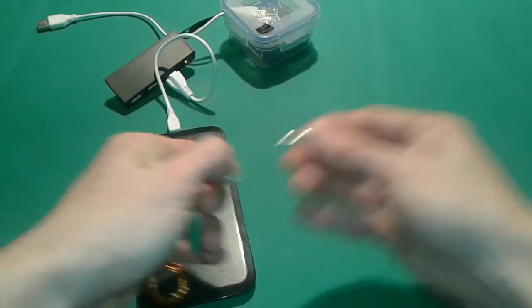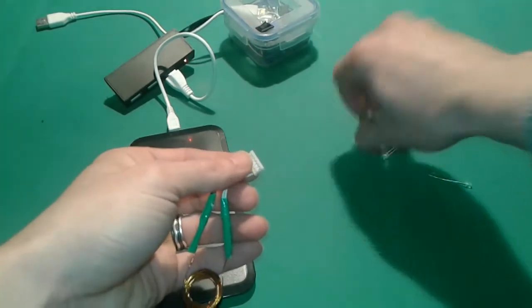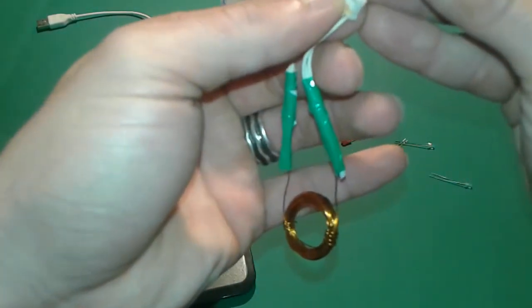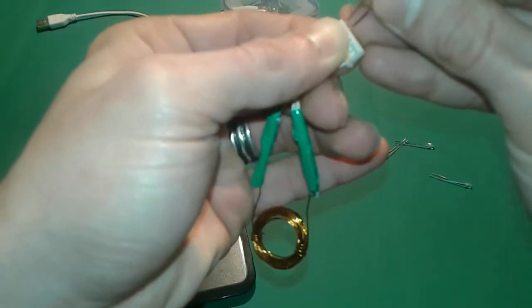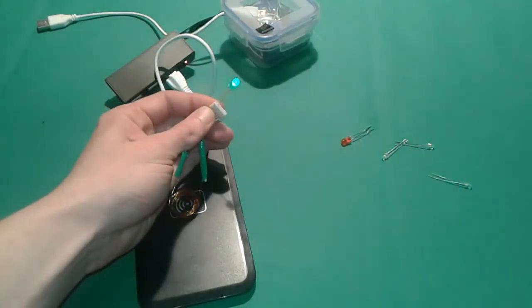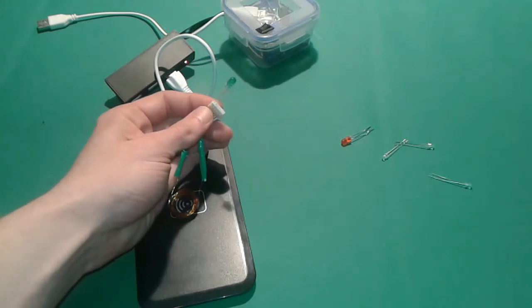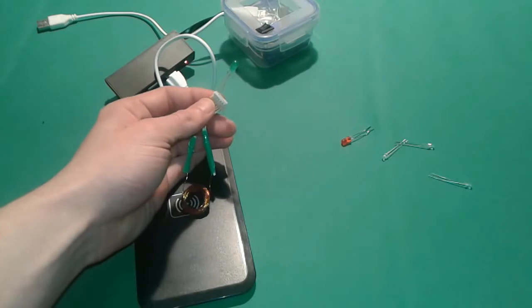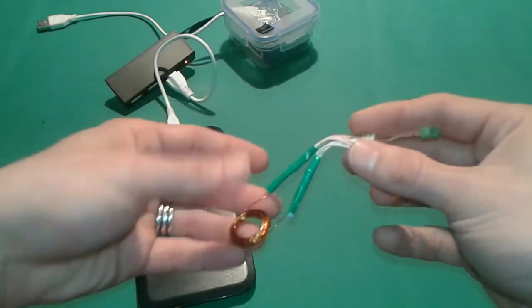Alright, let's test another LED, a green one. It's lighting. This is the wireless charger. You can test with this method all the LEDs that you have at home. You can even manage to test 5 volt and 12 volt ones for a brief period of time.